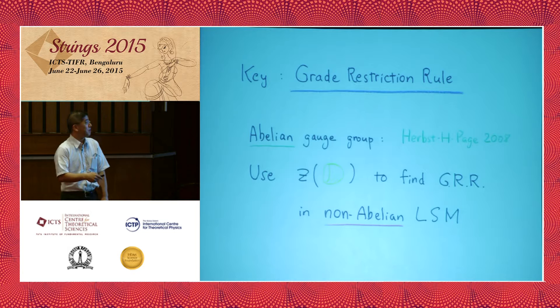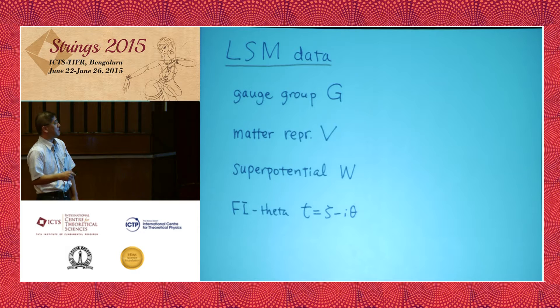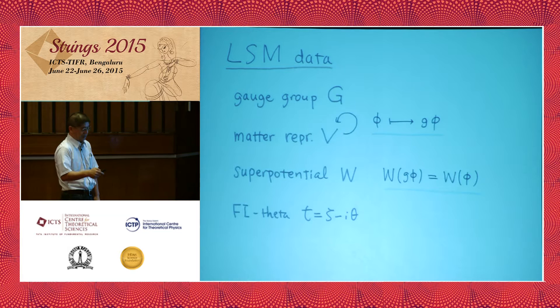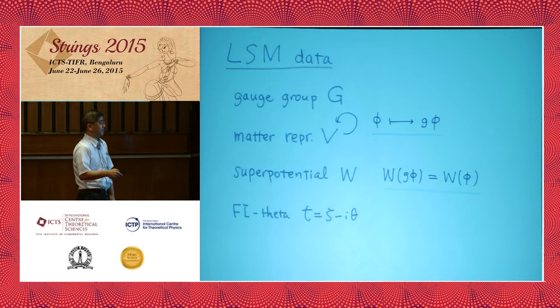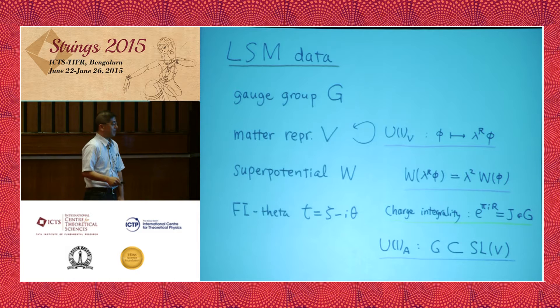The data to specify a linear sigma model is a choice of gauge group G, matter representation V, superpotential W, and FI-theta parameter — exactly like 4D N=1 theories. The superpotential must be gauge invariant. We assume that the theory has two U(1) R-symmetries: U(1) vector and U(1) axial. U(1) vector has a charge integrality condition, meaning you can assign R-charge to chiral fields so the superpotential has R-charge 2. For the axial symmetry, G belongs to SL(V) of the representation space.